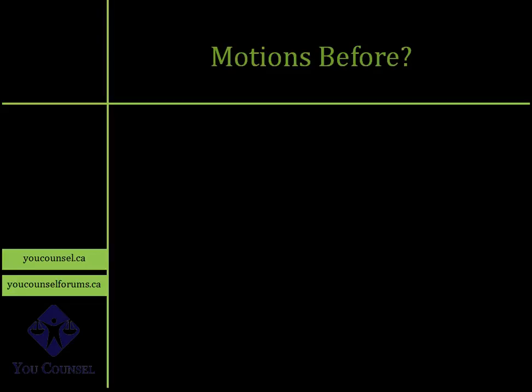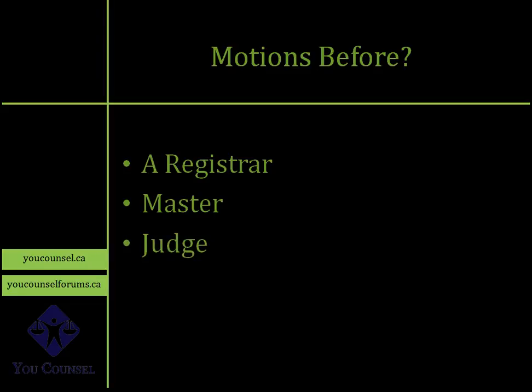Who do you bring the motion before? In Ontario civil court, you generally have three options: you can bring a motion before a registrar, a master, or a judge. A judge has overall power to hear any kind of motion, but masters and registrars have specific jurisdictions defined by the rules of civil procedure. You must know before commencing your motion who it should be brought before. A motion that ought to be brought before a master should not be brought before a judge, and similarly one for a registrar should not go before a master or judge. We have a separate lecture available on the difference between the powers of a master and a judge.